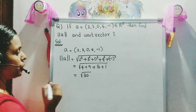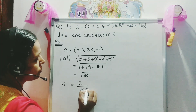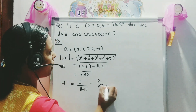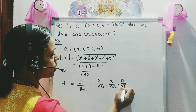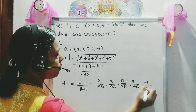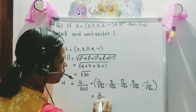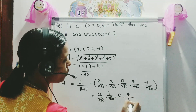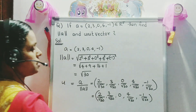Now we want to calculate the unit vector. The equation is U = A divided by norm A. So U = (2/√30, 3/√30, 0/√30, 4/√30, -1/√30). That is equal to (2/√30, 3/√30, 0, 4/√30, -1/√30). This is the unit vector.